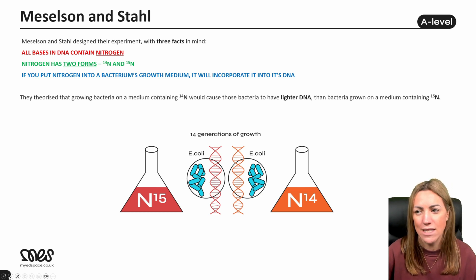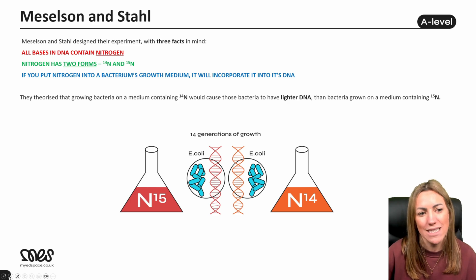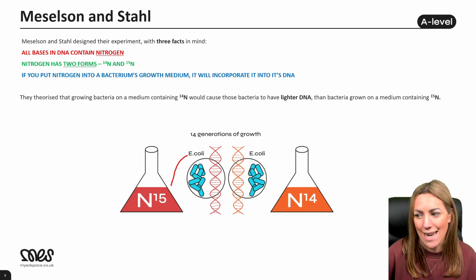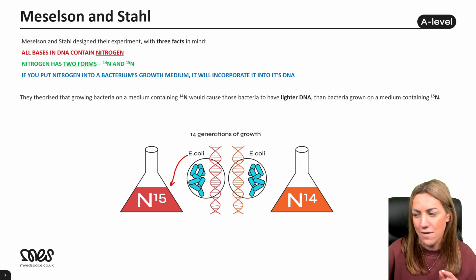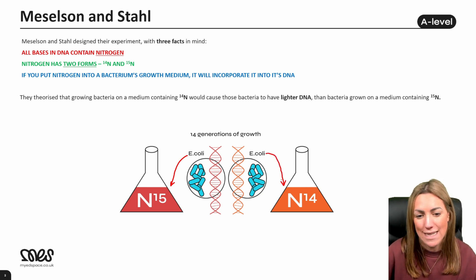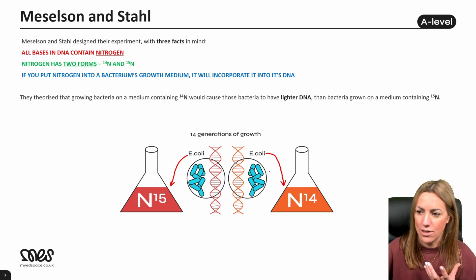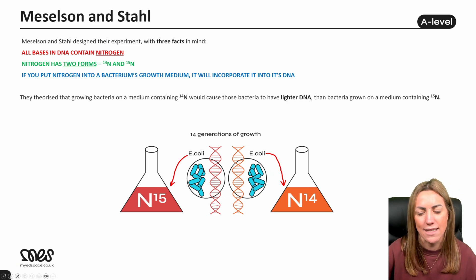They theorized that growing bacteria on a medium containing N14, or light nitrogen, would cause those bacteria to have lighter DNA than bacteria growing in a medium containing N15. They used E. coli — bacteria growing in a medium containing heavy nitrogen will have DNA made with nucleotides whose bases contain N15. Growing E. coli in N14 medium means their DNA will contain N14, or light nitrogen.